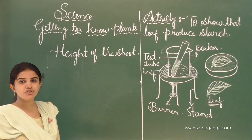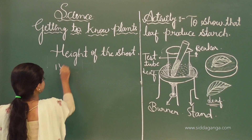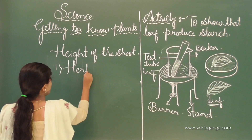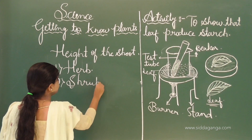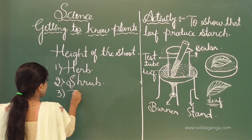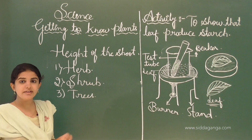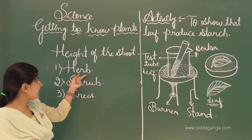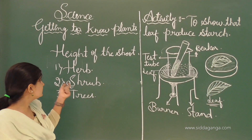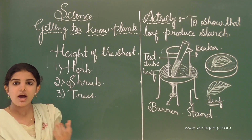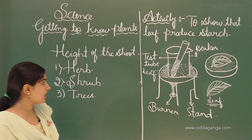Based on the height of the shoot, plants can be divided into different types, in which the first one is the herb, then shrub, and then trees. Herbs are small plants having a tender stem and they do not have any kinds of branches. Examples of herbs are coriander and other small plants which have a tender stem.